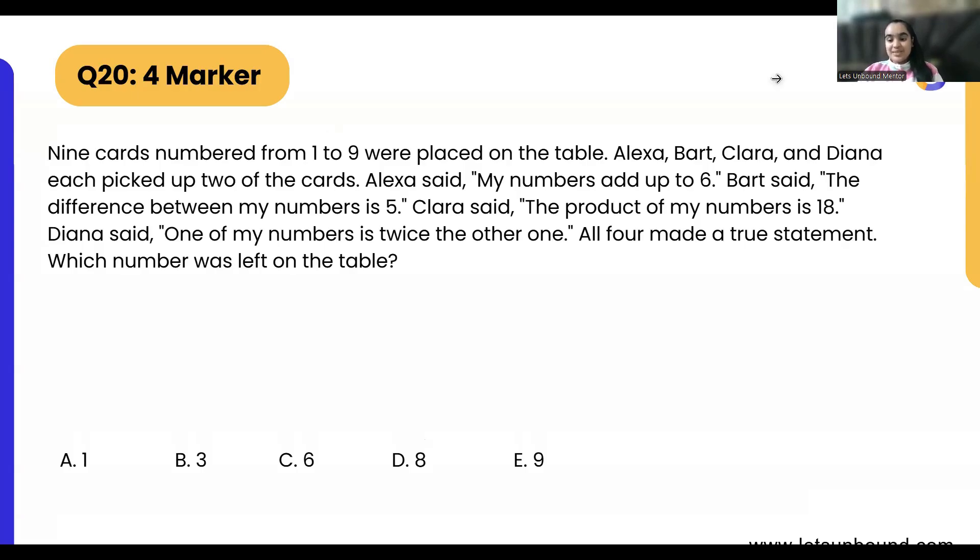So here the question is: nine cards numbered from one to nine. Basically we are having one, two, three, four, five, six, seven, eight, and nine. These nine cards are placed on the table. Alexa, Bart, Clara, and Diana each picked up two of the cards.